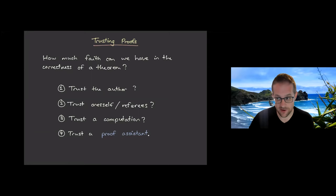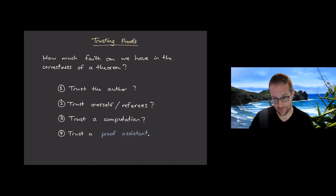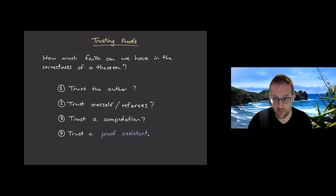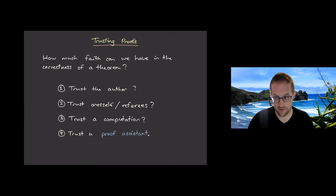Another option is that you can read the proof yourself — you ask for the proof, read it, and check all the details. You're trusting yourself. The normal peer review process is an extension of this: we trust other experts to have read things, and if a few people have read something independently and all believe it, it's more likely to be true. I don't have major doubts about any theorems on my radar.